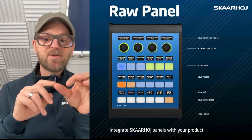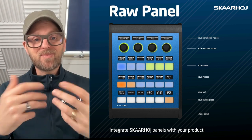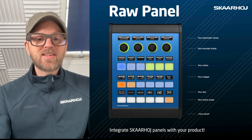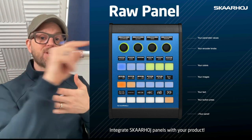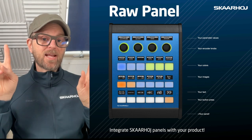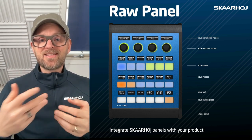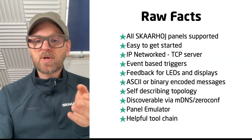The first thing I want to do is take you through a bunch of slides that will explain the basics. Basically, RawPanel is your parameter values, your encoder knobs, your colors, your images, your text, your button presses — it's all you on the panel. The alternative is that our panels integrate directly the protocol of external devices, but in this case we're turning it around. Our panels become like dumb panels, and all you care about is having an easy-to-use, efficient protocol to work with these panels.